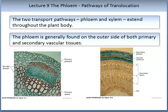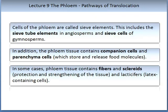There are two transport pathways, the phloem and the xylem, and they extend throughout the plant body. The phloem is generally found on the outer side of both the primary and secondary vascular tissues, as illustrated in the figure on the slide showing both xylem and phloem structure. Cells of the phloem are called sieve elements. These include the sieve tube elements in the angiosperms and the sieve cells of the gymnosperms. In addition, the phloem tissue contains companion cells, parenchyma cells, and in some cases fibres and scleroids.